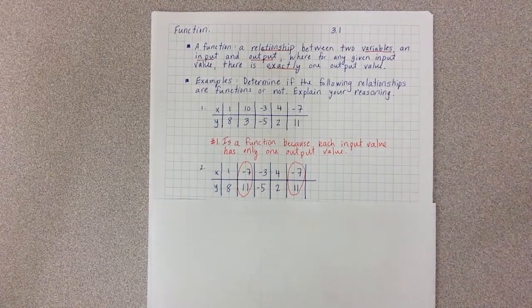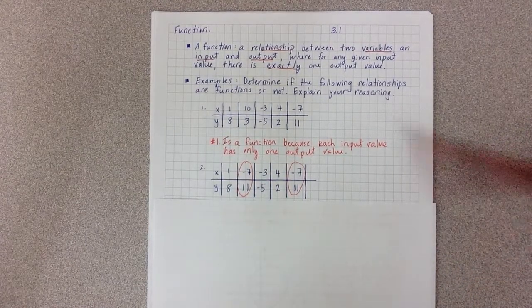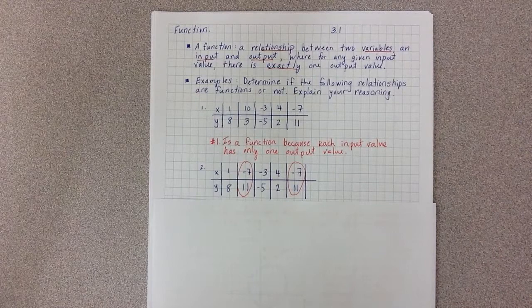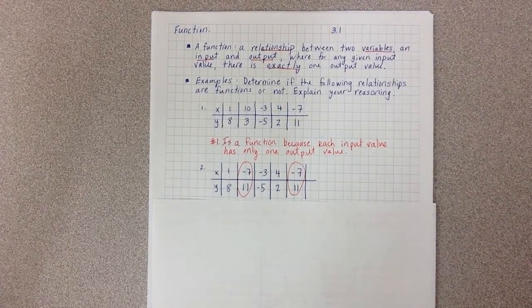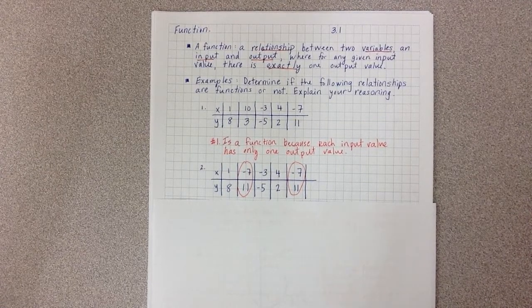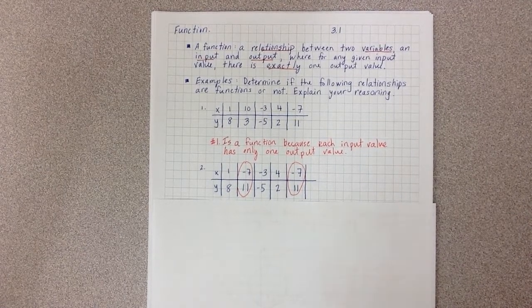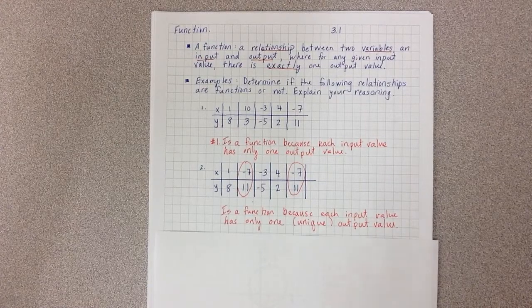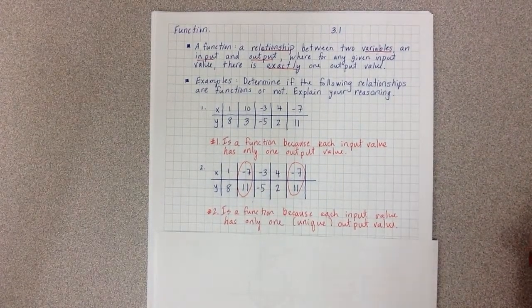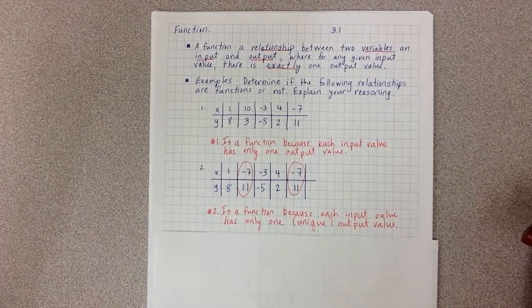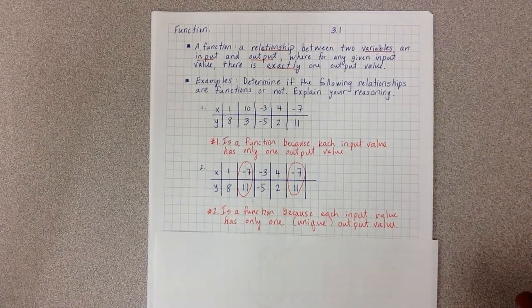Only one value. I say -7, you say 11. I say -7, you say 11. It doesn't matter how many times I ask the question. If I get the same answer every time, it is a function. So number 2 is a function because each input value has only one unique output value.